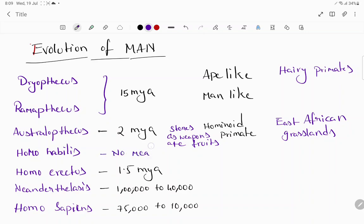Coming to Homo habilis, no meat. Homo erectus probably ate meat. And Neanderthalensis, they used to hide in caves and buried their body. Homo sapiens, cave paintings.